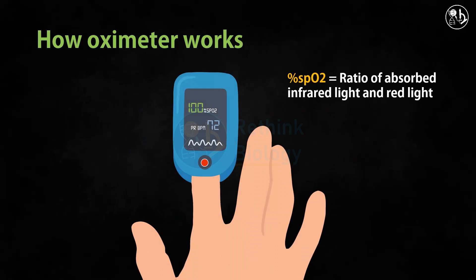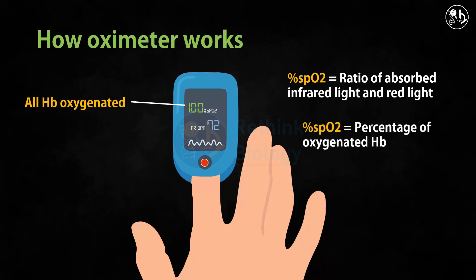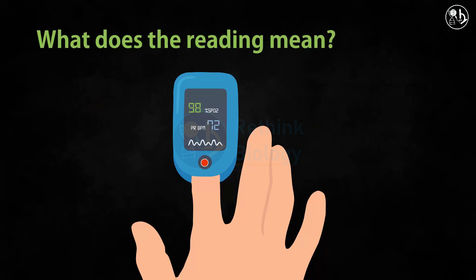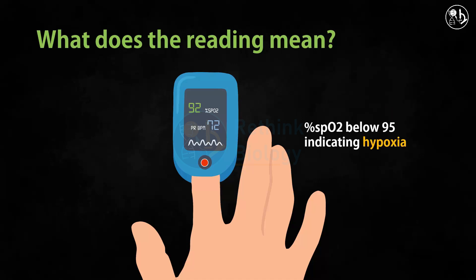100% SpO2 means all the hemoglobin molecules are saturated with oxygen. A healthy adult should have SpO2 levels of 95% or above. A constant reading below 95% indicates a hypoxic condition and needs immediate medical supervision.